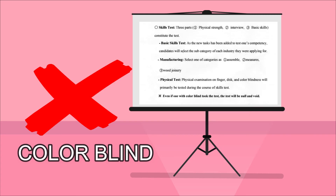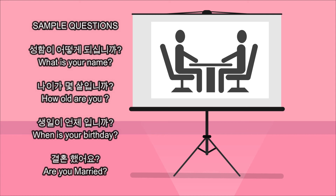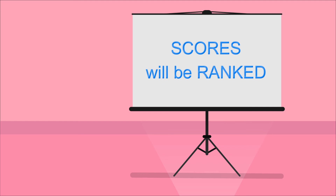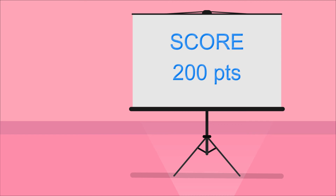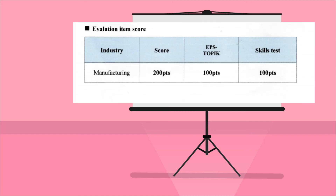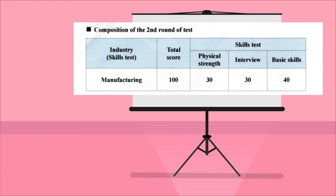For the interview, this will assess your Korean language skills. Your chance to be included as one of the successful passers depends on your scores — the scores will be ranked, and the higher your score, the higher your chance to be hired. The total score is 200 points: the first round is 100 points for the EPS TOPIK, and the second round is another 100 points for the skills test, divided into three parts — physical strength at 30 points, interview at 30 points, and basic skills at 40 points.